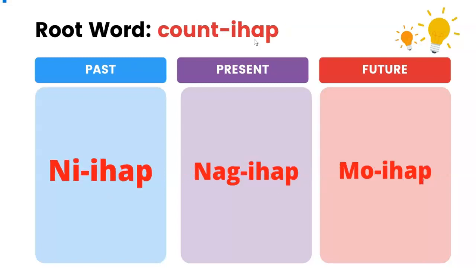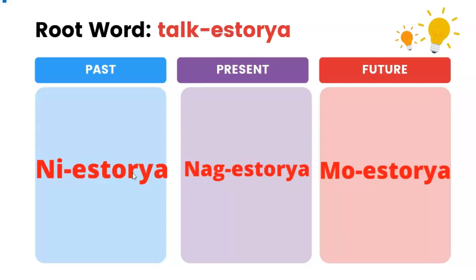Count — ihap. Past: niihap. Present: nag-ihap. Future: muihap. Talk — istorya. Past: niistorya. Present: nag-istorya. Future: muistorya.